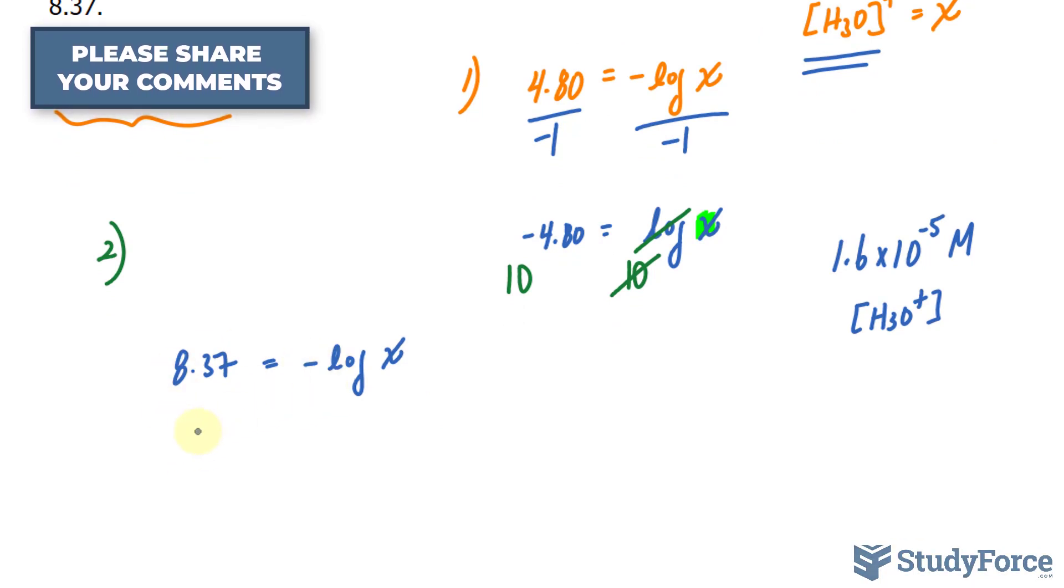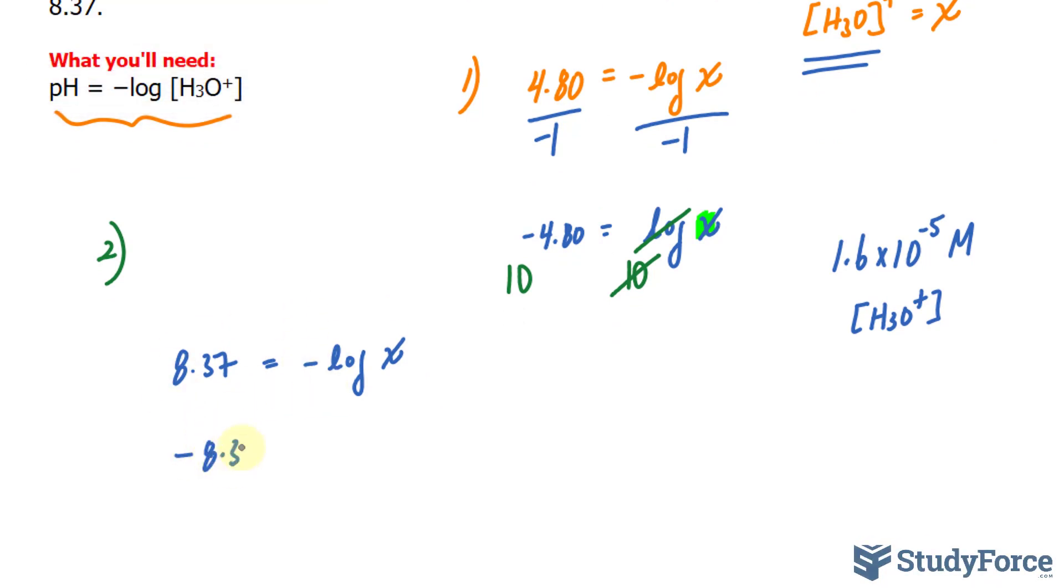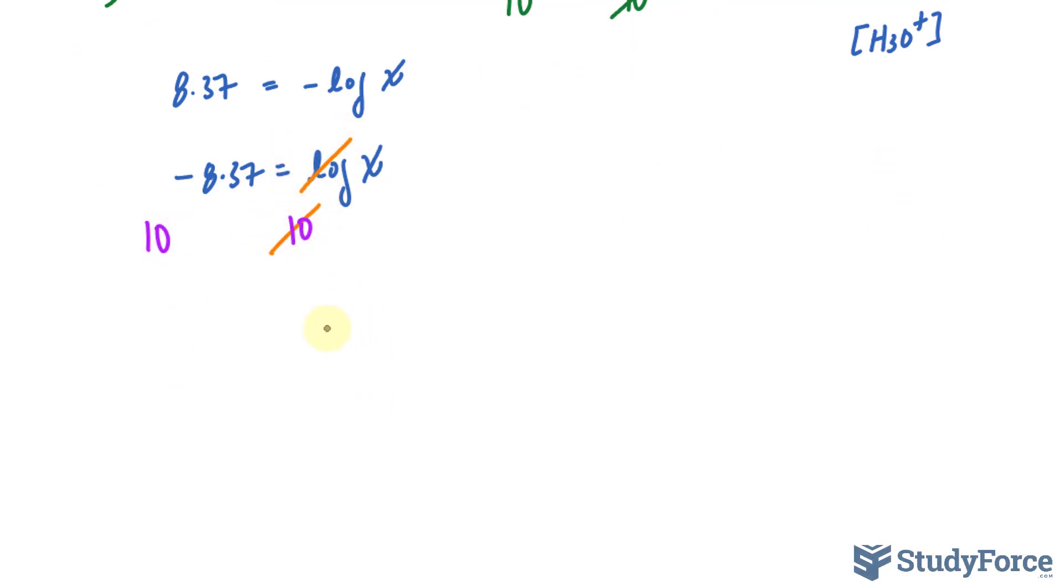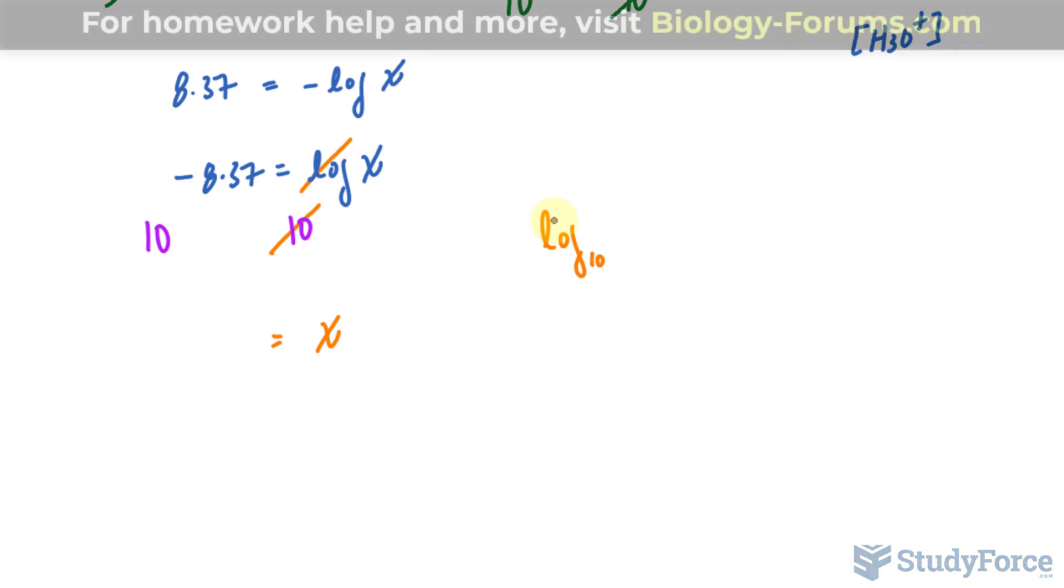Once again, dividing both sides by negative gives us negative 8.37 on the left side and log X. I'll raise both sides as powers to the base 10. And this 10 and this log will cancel out, leaving us with X. Because remember, this is a common log. Log, when it's written like this, has a base of 10 already. That's why raising it to a base of 10, when it's a power, eliminates it.